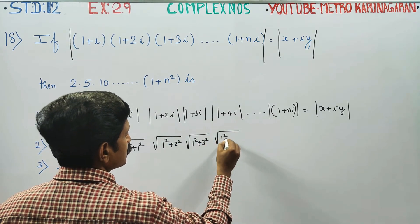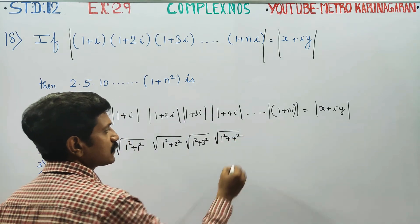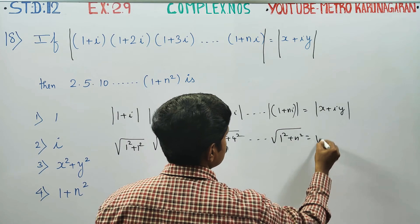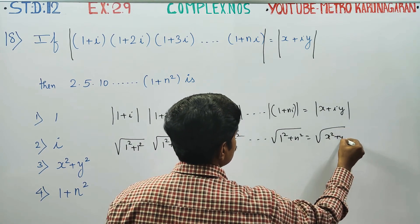Square root of real part square plus imaginary part square. Square root of 1 square plus n square equals square root of x square plus y square.